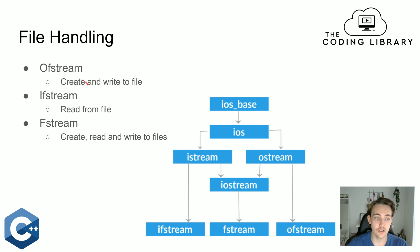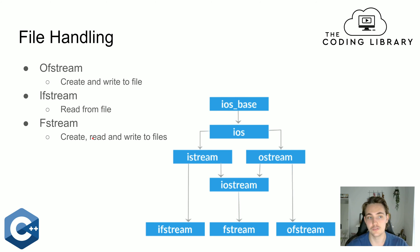With ofstream, we can create and write to a file. With ifstream, we can only read from a file. And with fstream, we can both create, read, and write to files.